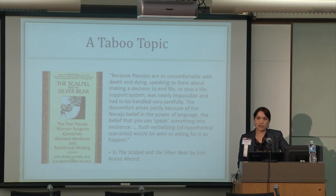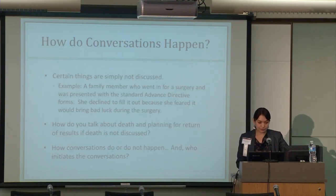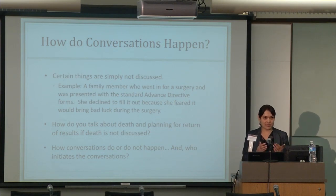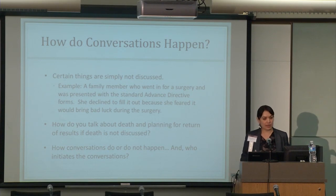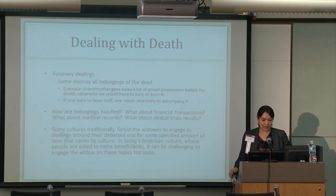How do you talk about return of results when you know that death is inevitable? There might be culturally appropriate ways to think about this. A family member who went in for surgery was presented with standard advance directive forms and declined to fill them out because she feared it would bring bad luck during surgery. Even something as benign as documentation about who should make decisions was seen as a taboo. So how do these conversations happen or not happen, and how do you initiate them?